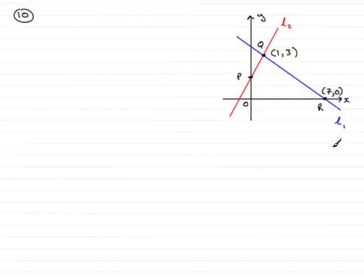Now in question 10, we're given this graph of two lines, L1 and L2, that intersect at point Q with coordinates (1, 3), and line L1 intersects the x-axis at point R with coordinates (7, 0).